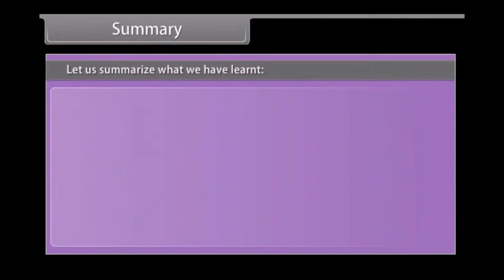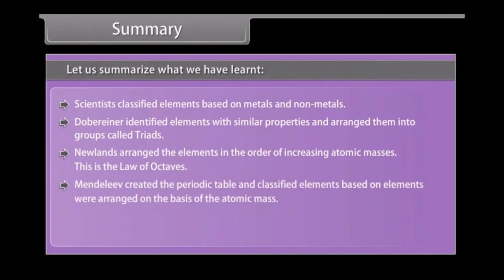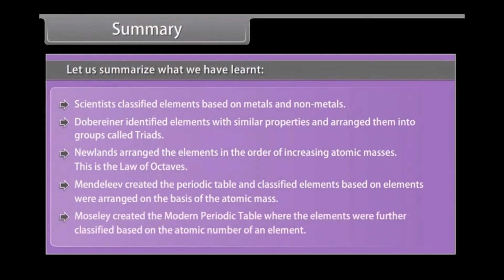Summary. Let us summarize what we have learned. Scientists classified elements based on metals and non-metals. Dobereiner identified elements with similar properties and arranged them into groups called triads. Newlands arranged the elements in the order of increasing atomic masses. This is the law of octaves. Mendeleev created the periodic table and classified elements based on atomic mass. This mostly created the modern periodic table where the elements were further classified based on the atomic number of an element.